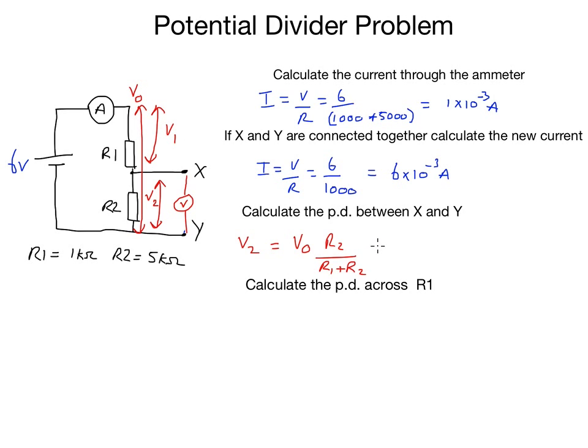Plugging in the numbers, V0 is 6 volts as you can see from the diagram. R2 is 5,000, so it would be 6 times 5,000. And R1 plus R2, as we already know, is 6,000. There's my sum, resulting in an answer of 5 volts.